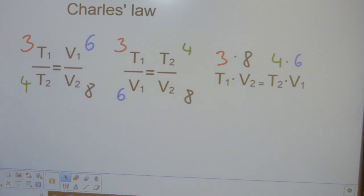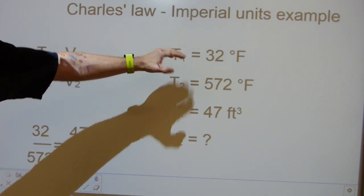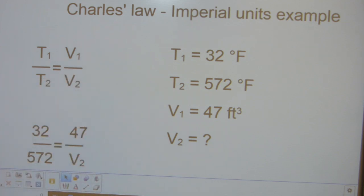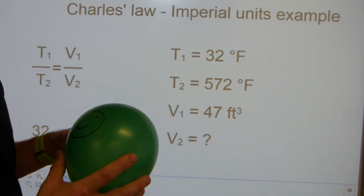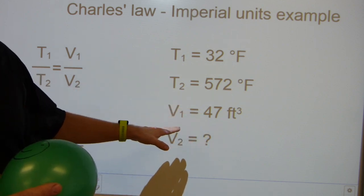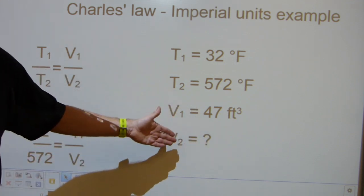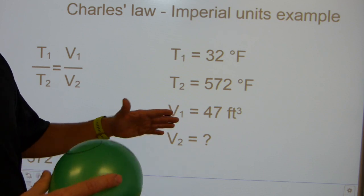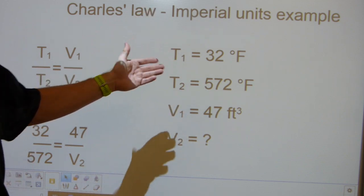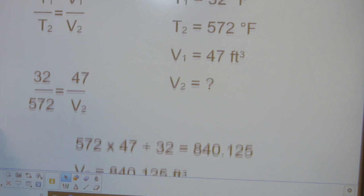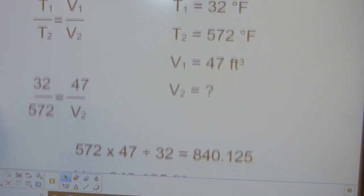Let's look at a calculation sample here using this format. If the temperature starts at 32 degrees Fahrenheit and goes up to 572 degrees, and the initial volume is 47 cubic feet, what's going to be the resultant volume of the gas that's heated up? Do notice the input here is heat increasing.